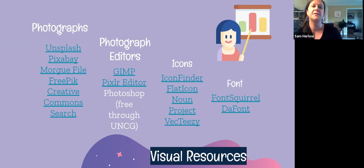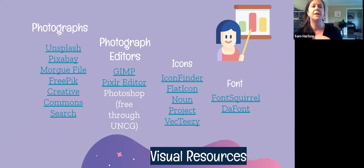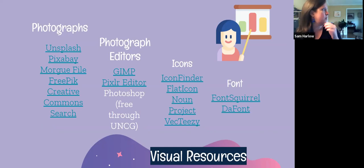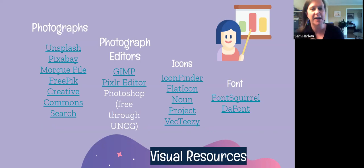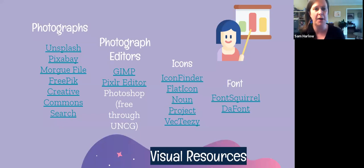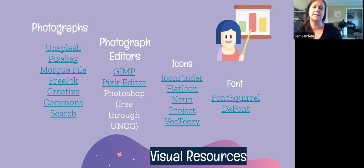Unsplash is the huge one for photographs — they're all stock images. Pixabay, Morgue File, Freepik, and the Creative Commons search where you can search and use for free. All four of these, from what I could tell, are free to use. Unsplash is the one I use the most — totally free to use, they give you citations. If you want a waterfall, they're all completely free of copyright issues, and they give you easy share and citation information so you can say 'this photo is by Tom Gaynor on Unsplash' and put that in your credits page.